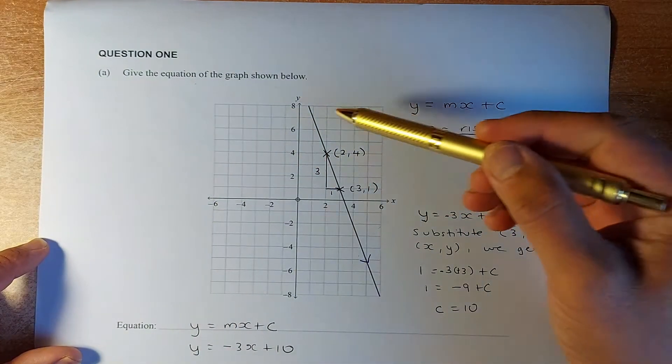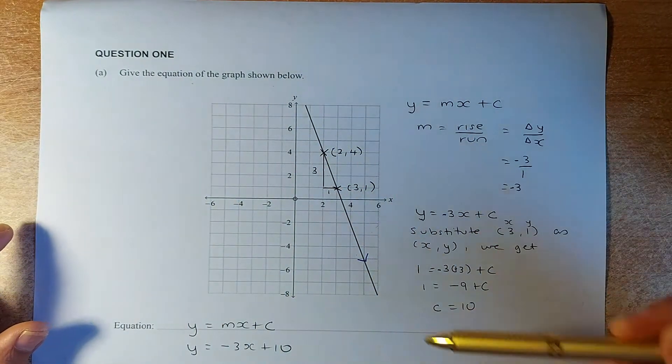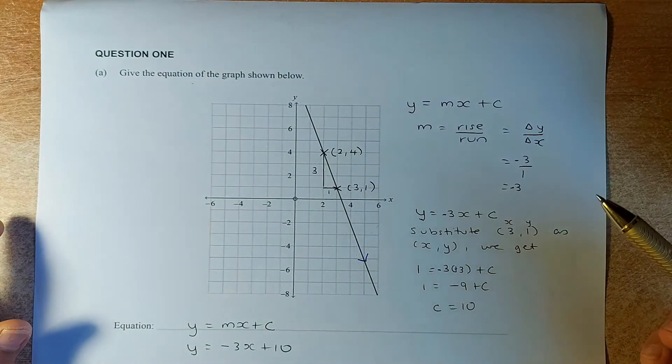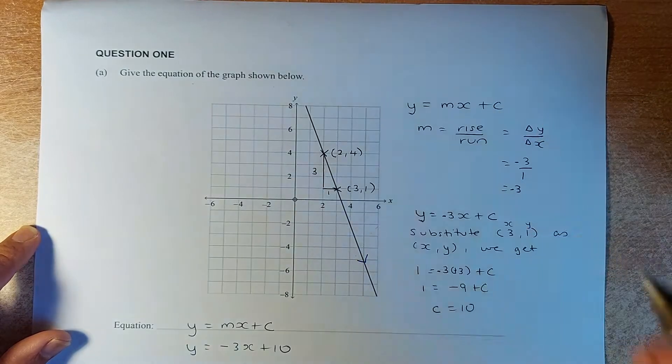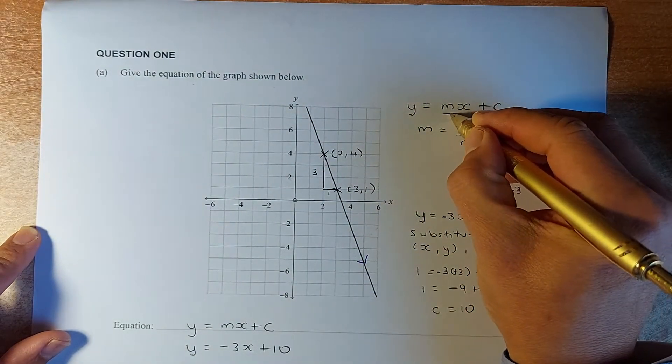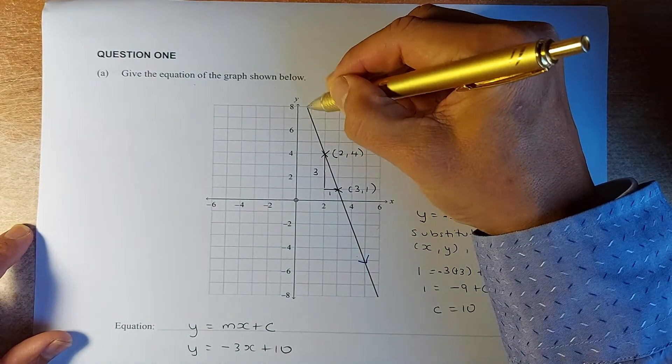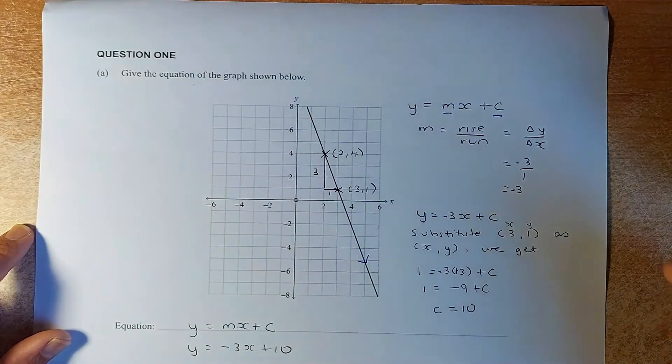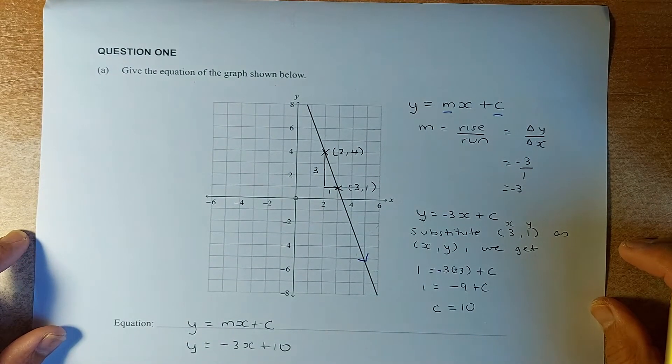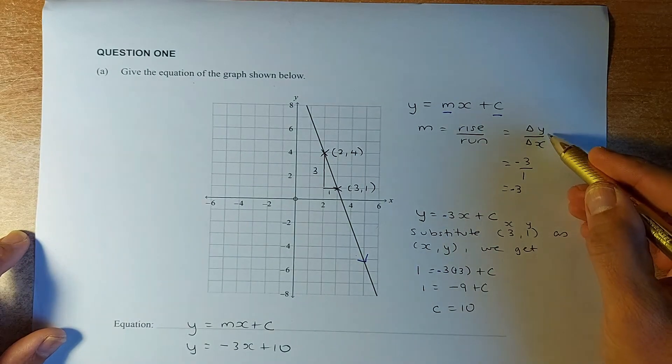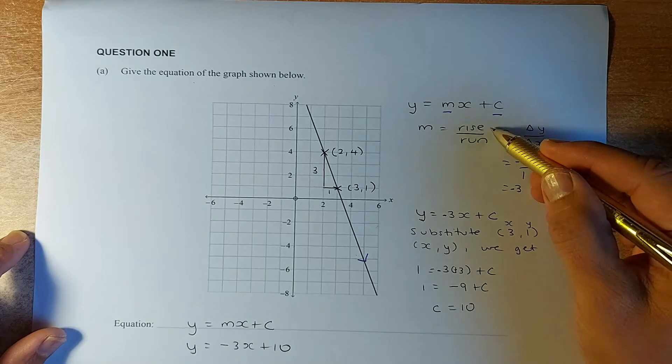So now, the first question, they give you the graph and you are going to find the equation of the graph. So this is a straight line graph. The equation of a straight line graph is always y equals mx plus c. So your job is to find your m and your c. For c, it's a y-intercept. In this case, you can't find the y-intercept. So we have to use substitution to make sure we are right. m is the gradient. Gradient is the change in y divided by change in x, or commonly called rise divided by run.